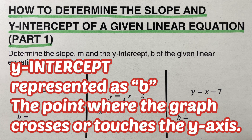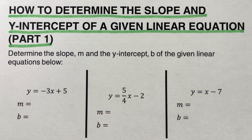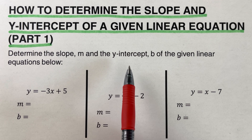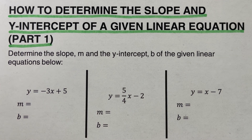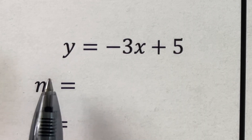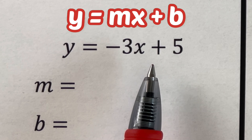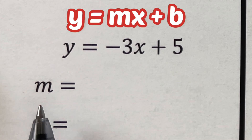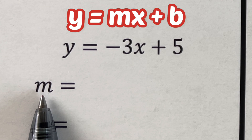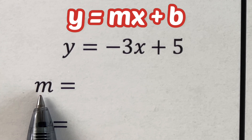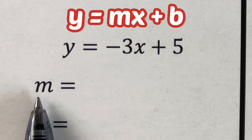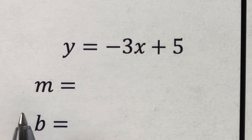Let's take this example: determine the slope m and the y-intercept b of the given linear equations below. The first one is y = -3x + 5. This is in the form y = mx + b, where m is the slope — specifically, the coefficient of x, meaning the number in front of x.